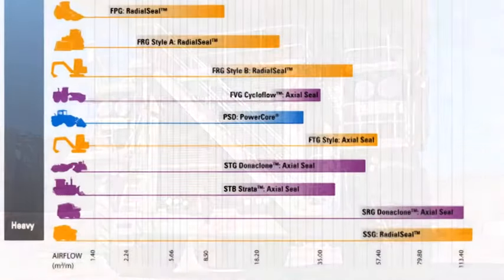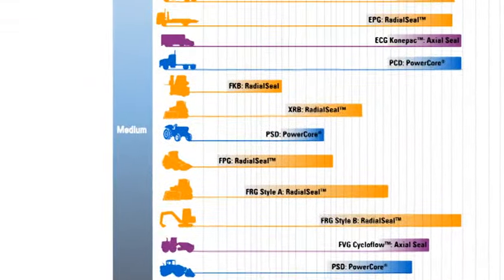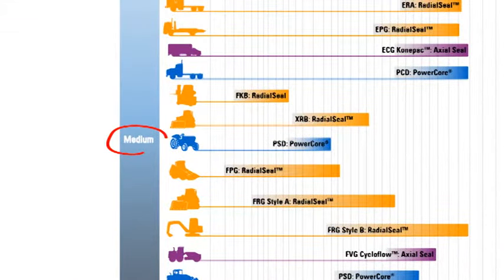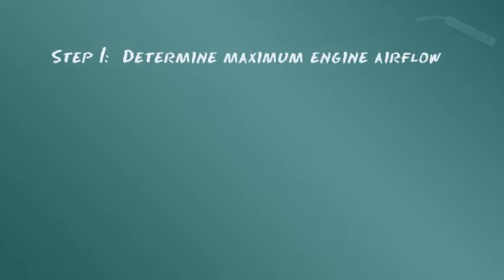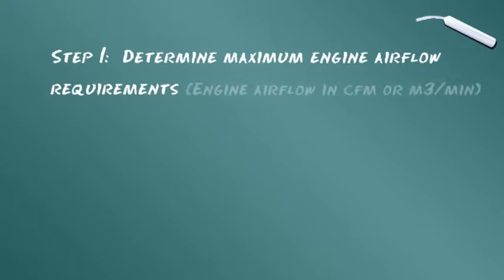Nehmen wir an, Ihr Fahrzeug wird in einer Umgebung mit mittlerer Staubbelastung betrieben. Als ersten Schritt muss der maximale Luftmengenbedarf der Maschine bestimmt werden. Diese Daten werden in CFM, Kubikfuß pro Minute, oder mit dem metrischen Äquivalent Kubikmeter pro Minute angegeben.